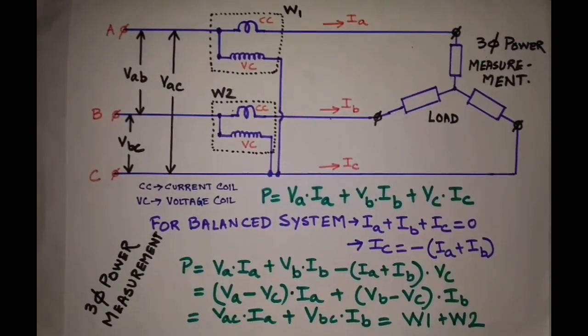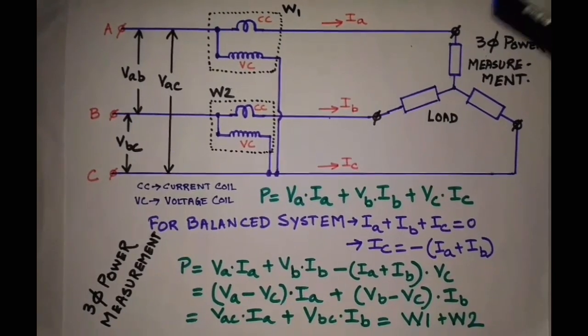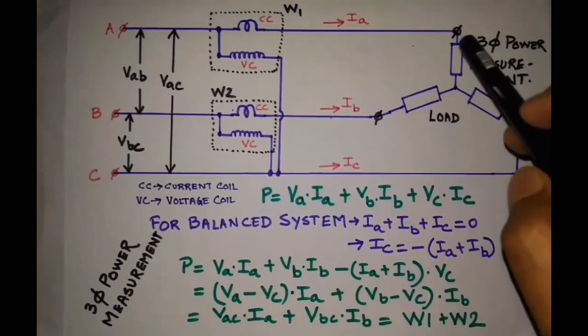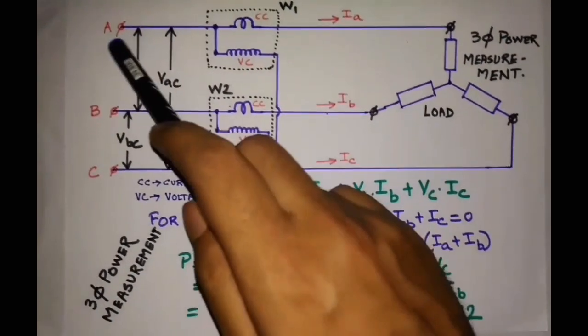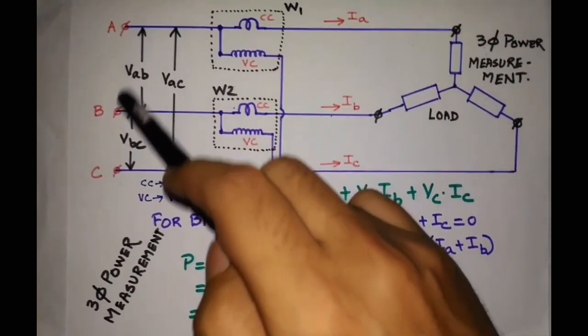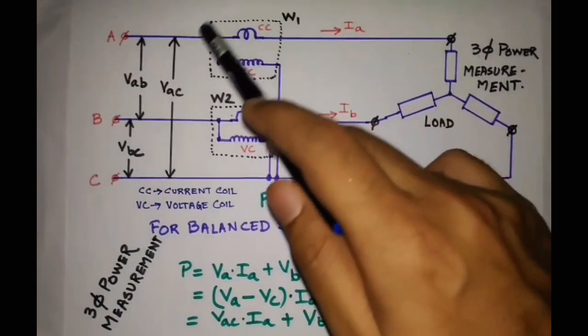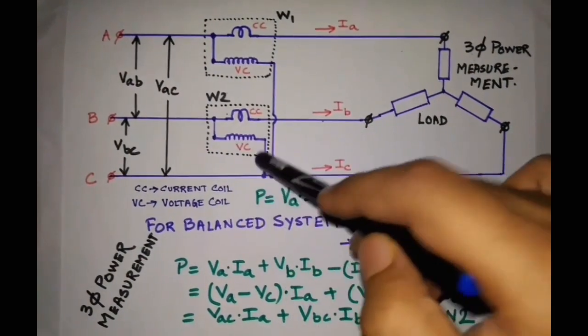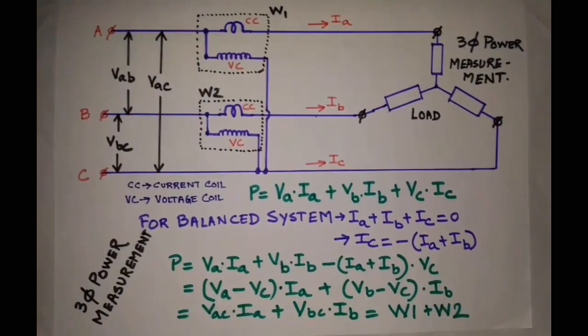For measuring the three-phase power, the most common method used is two wattmeter method. We have a three-phase load here, this is our three-phase load and this is three-phase supply A, B, C. We will use two wattmeters, wattmeter 1 and wattmeter 2, to measure the three-phase power.